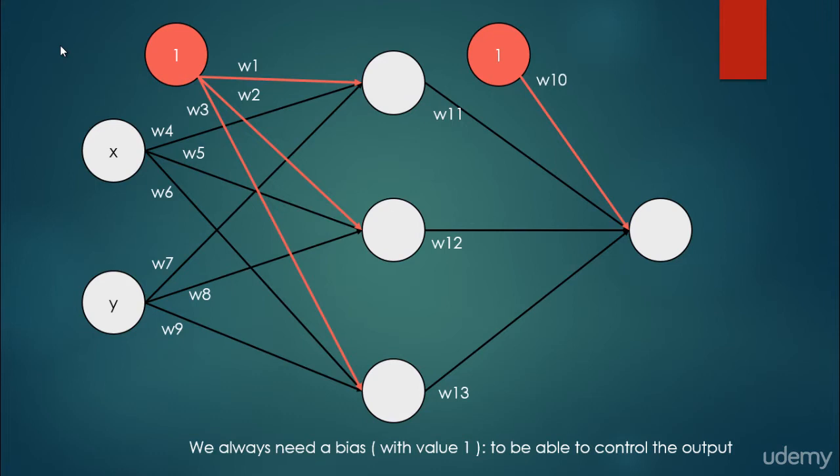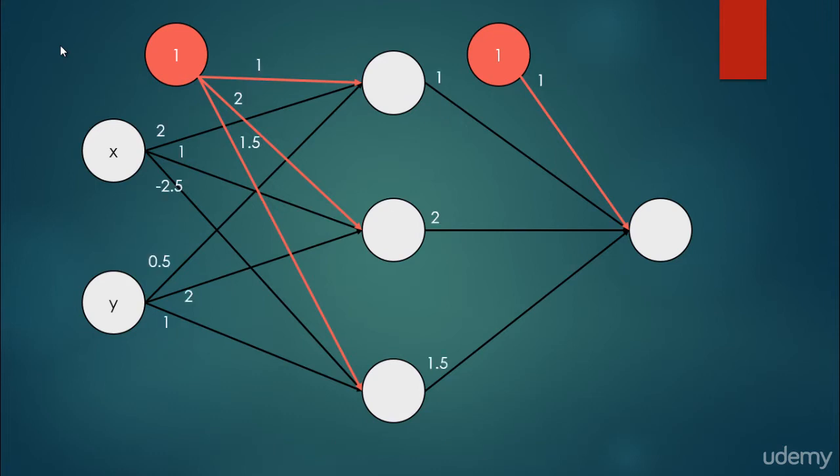Of course we assign an edge weight to every directed edge, and we initialize it randomly. It's very important that at the beginning we don't know the concrete edge weights, because if we did, we wouldn't even need to train the neural network. This is why training is necessary — we should arrive at the appropriate edge weights through continual updating during training.